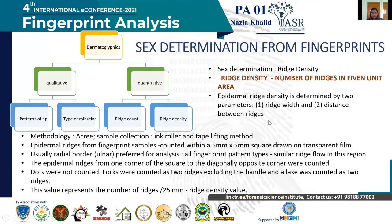Coming to the topic of sex determination from fingerprints and dermatoglyphics, the study can be divided into qualitative as well as quantitative. Qualitative study includes pattern of fingerprint, type of minutiae, etc. Whereas quantitative analysis deals with ridge count and ridge density. Sex determination can be done by means of ridge density, which is defined as the number of ridges present in a given unit area.